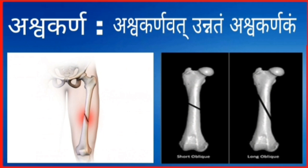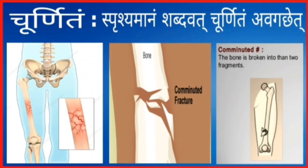In Ashwakarnam, the fracture site fragments or ends of the bone are raised up. The simile provided by Acharya is that it appears like the ear of a horse. This type is known as Ashwakarnam.